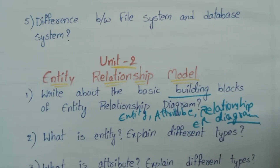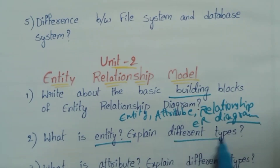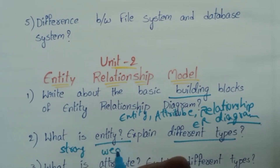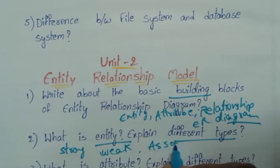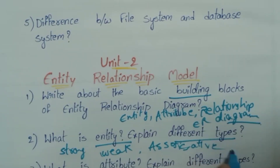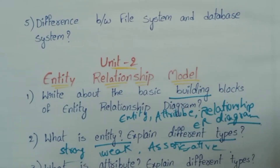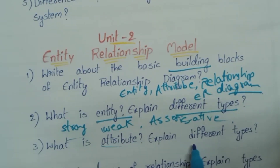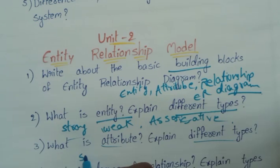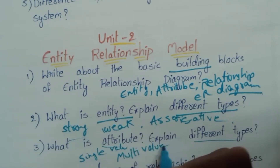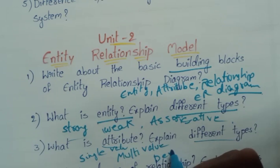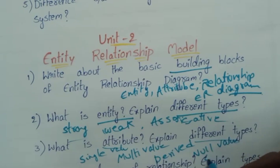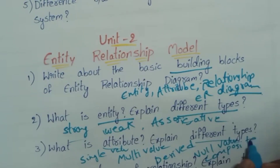What is an Entity? Explain the different types of entity: Strong Entity, Weak Entity, and Associated Entity. What is an Attribute? Explain types of attributes: Single Value, Multi Value, Derived Attribute, Null Value Attribute, and Composite Attribute.